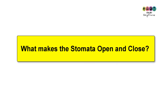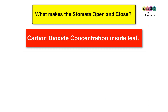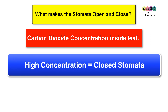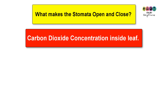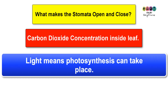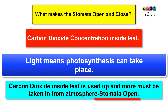What makes the stomata open and close? One factor is the concentration of carbon dioxide inside the leaf. If there is a high concentration of CO₂ inside the leaf, the stomata close — this is generally why stomata are closed at night, as there is no photosynthesis but cells are respiring and releasing CO₂. During daylight, photosynthesis uses up the CO₂, so the stomata must open to allow more in.